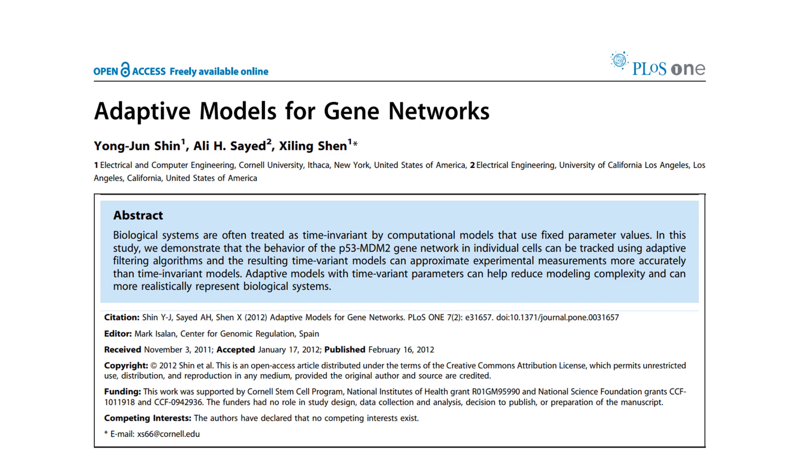In this video, I'm going to explain how an adaptive filter called LMS filter or least mean squares filter can be used for adaptive system identification of simple two gene regulatory network. This is based on my previously published paper titled Adaptive Models for Gene Networks. If you are interested in reading this article, please check the link shown in the video description.